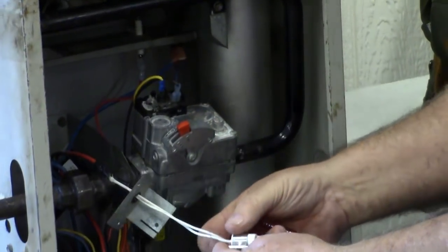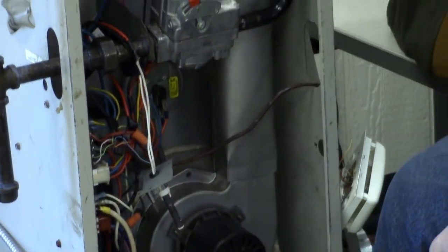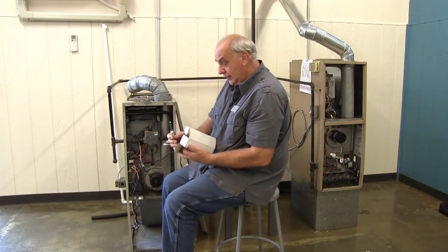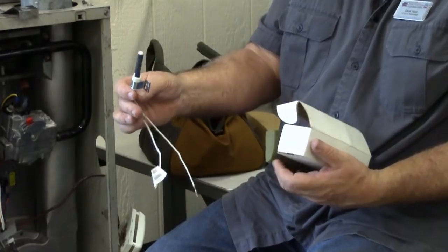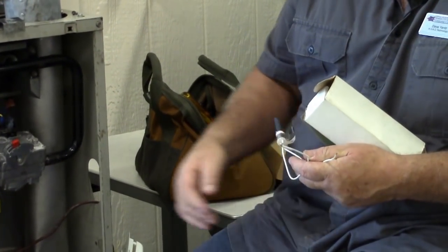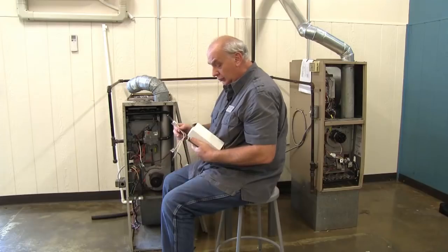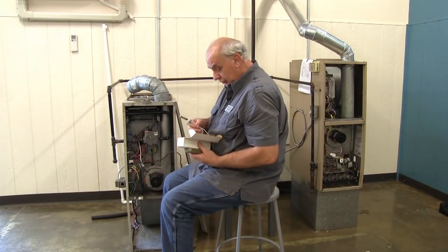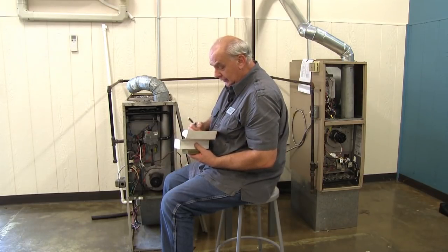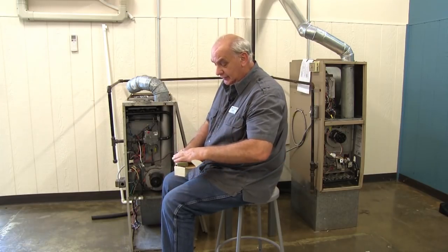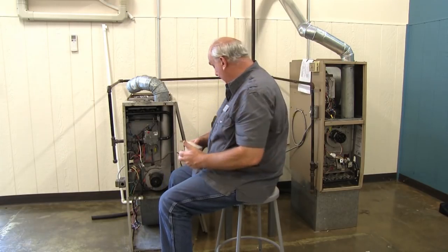This igniter here is this one here that I would put in for replacement. The two wires coming down are just bare wires and they are wire nutted to the circuit board, and that's where this igniter receives its power from to operate.